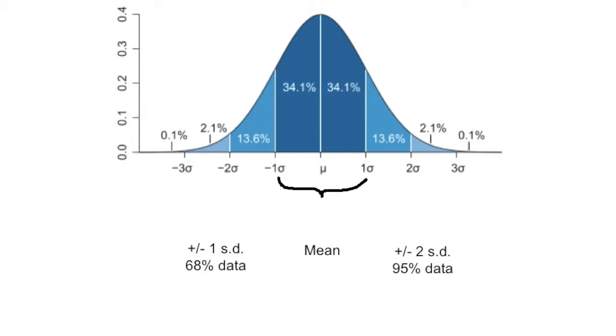An addition or subtraction of one standard deviation from the mean will encompass 68% of the data in that data set, while an addition or subtraction of two standard deviations from the mean will encompass 95% of the data from that set.